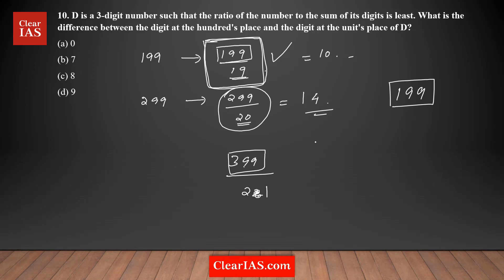The question asks for the difference between the digit at the hundreds place and the digit at the units place. For 199, the digit at the units place is 9 and the hundreds place is 1. The positive difference is 9 minus 1, which is 8. So the answer is Option C.